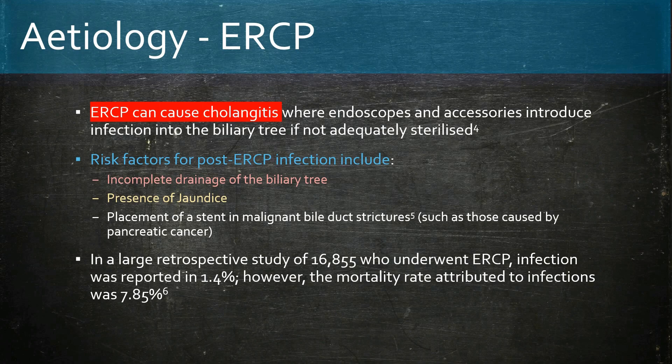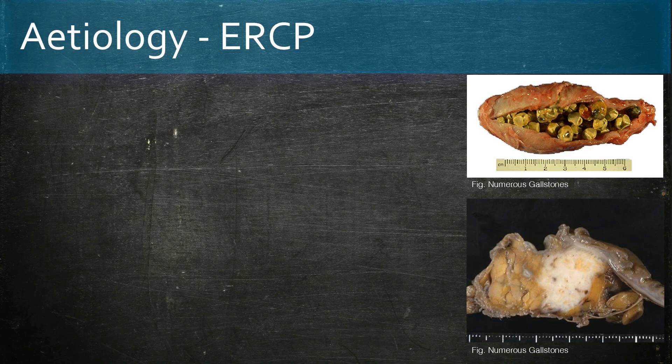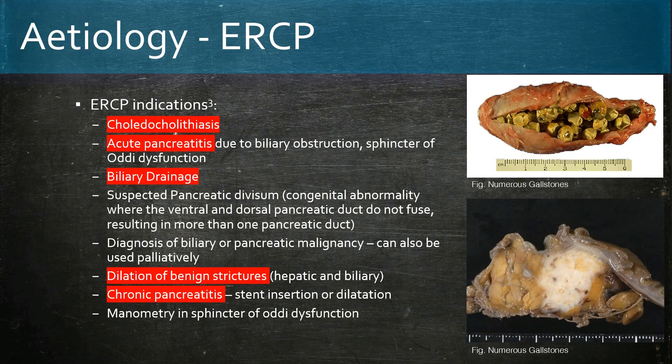However, the mortality rate of said infections was nearly 8%. There are several indications for ERCP including gallstones, pancreatitis, biliary drainage, diagnosing a pancreatic divisum where the ventral and dorsal pancreatic ducts do not fuse, diagnosing pancreatic or biliary malignancy, dilatation of hepatic and biliary strictures, stent insertion or dilation procedures in chronic pancreatitis, and manometry readings in sphincter of Oddi dysfunction.